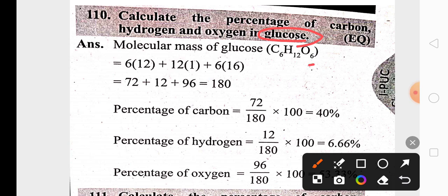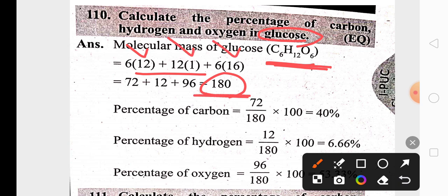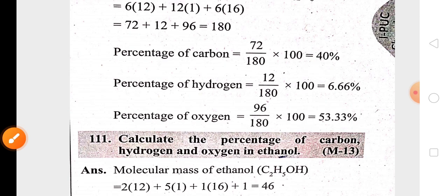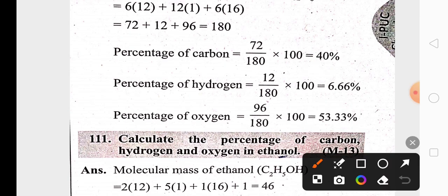Another important question for three marks is percentage composition. For example, we need to calculate the percentage composition of glucose. The molecular formula of glucose is C₆H₁₂O₆. The atomic mass of carbon is 12, hydrogen is 1, and oxygen is 16, giving a molar mass of 180. The percentage of carbon is 72 divided by 180 into 100. The percentage of hydrogen is 12 divided by 180 into 100, giving 6.66%.